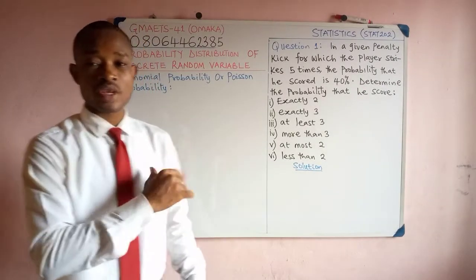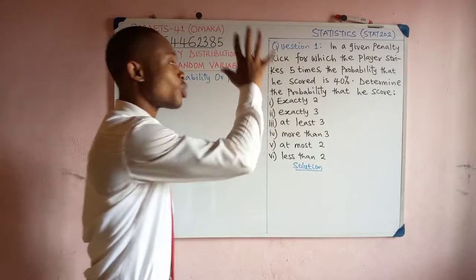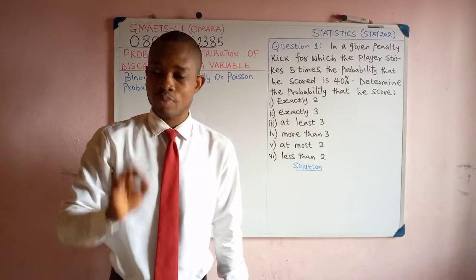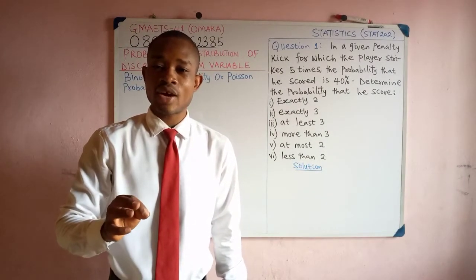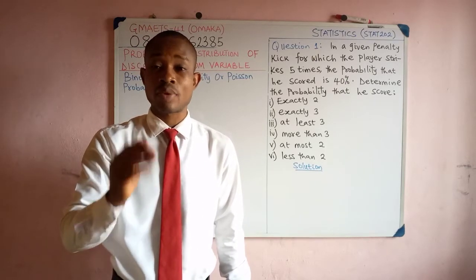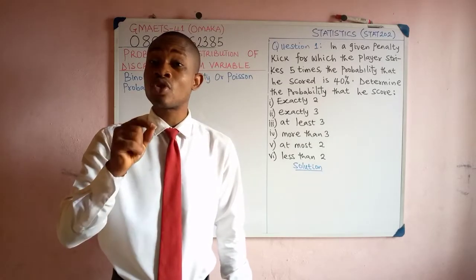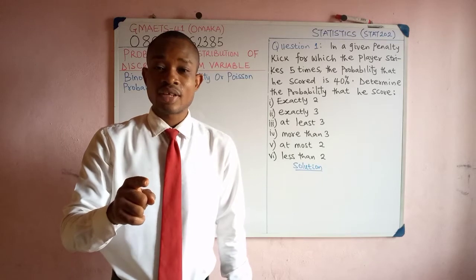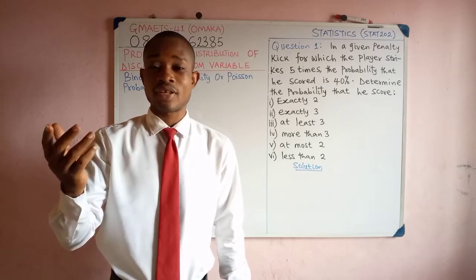So we have six questions here. First of all, let's identify whether this question is binomial probability or Poisson's probability. To identify that we need to check back the conditions we established already for each of these probabilities. For binomial probability, the probability of success P is expected to be greater than 10%, that is greater than 0.1.